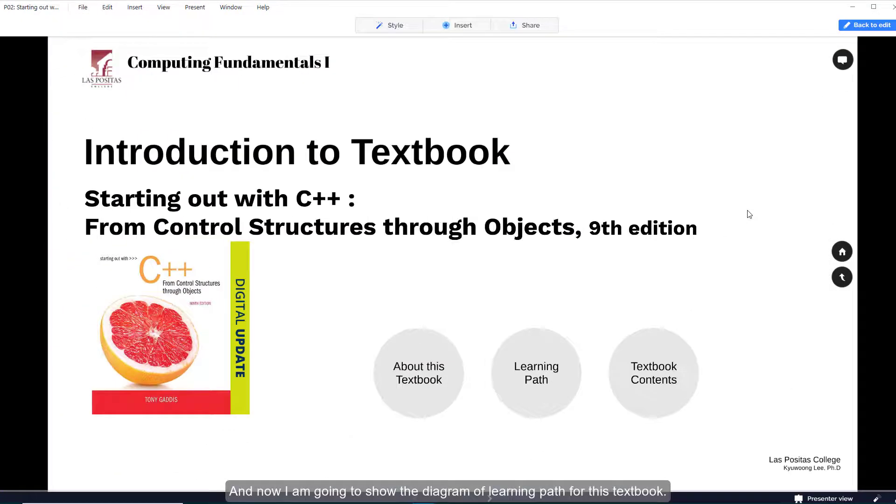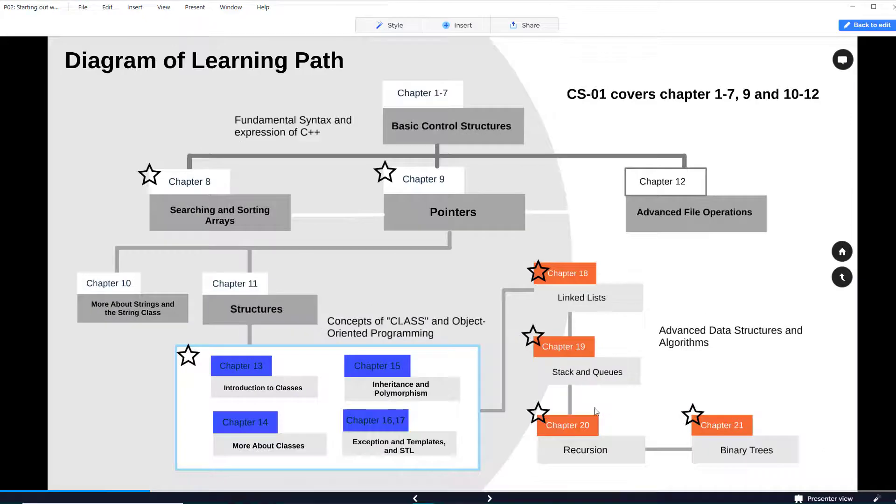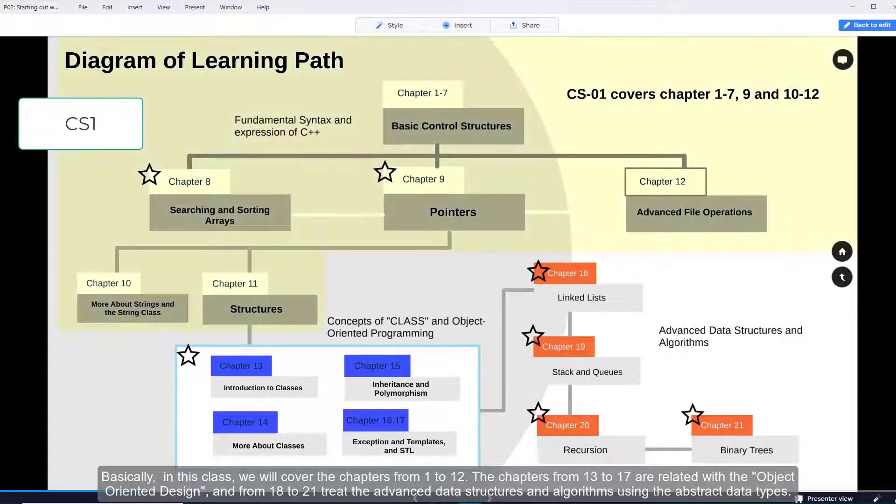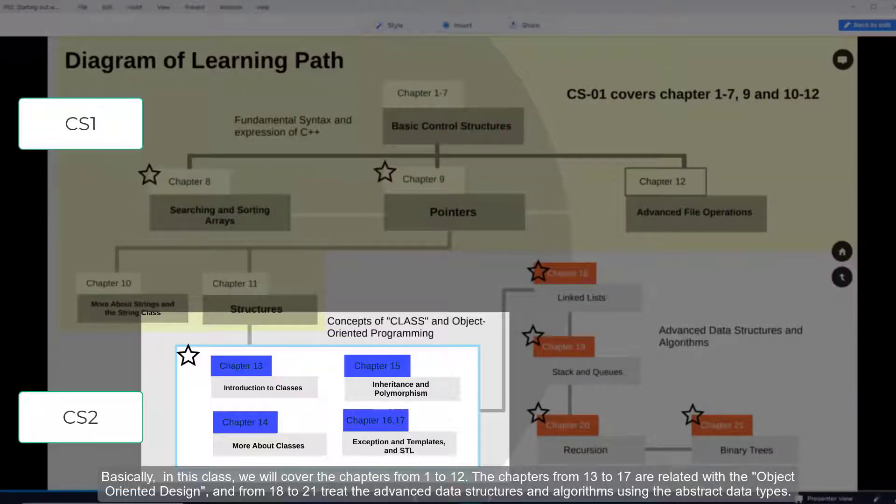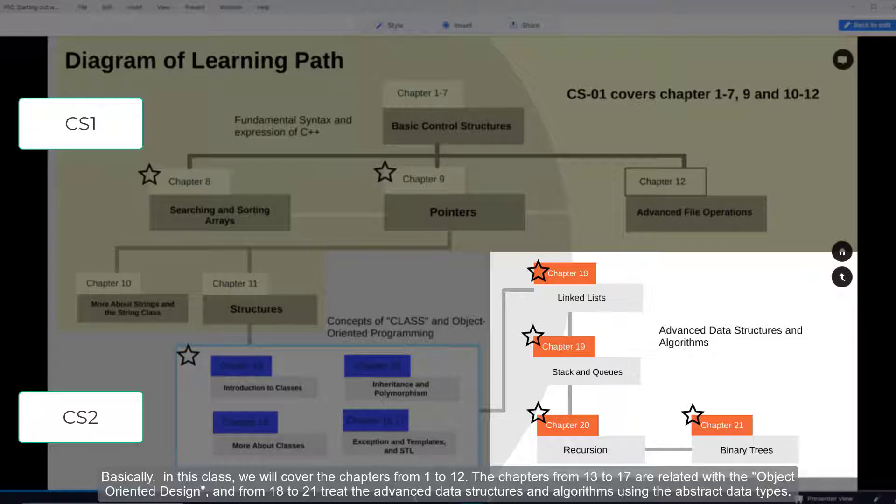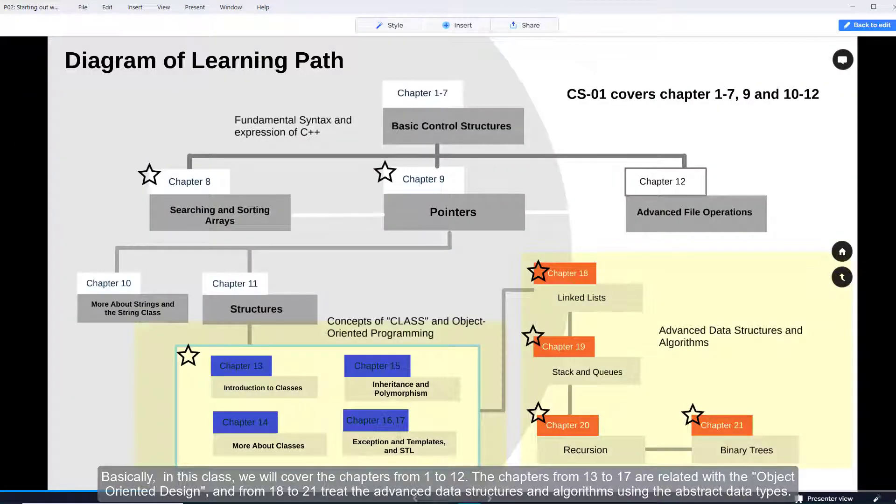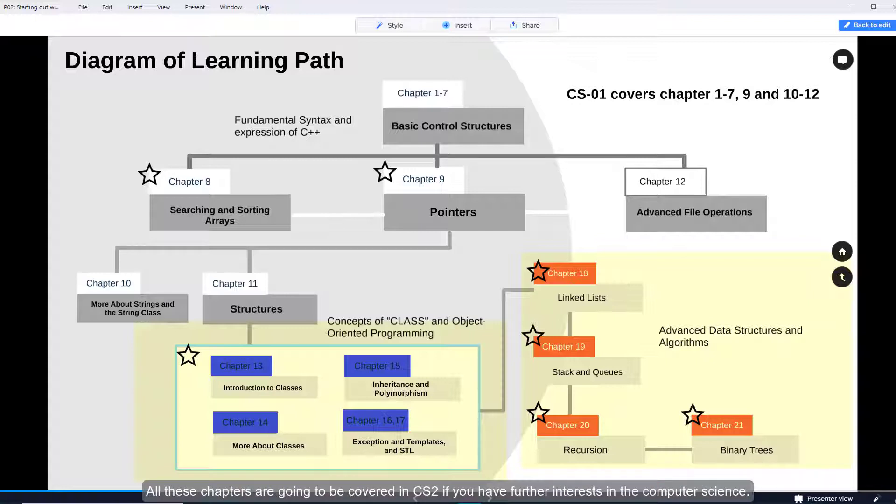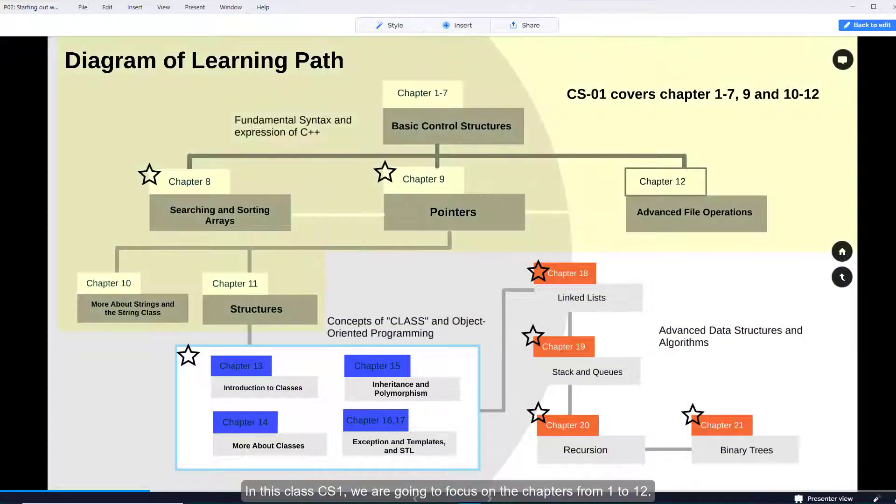Now I'm going to show the diagram of a learning path for this textbook. Basically in this class we will cover chapters from 1 to 12. The chapters from 13 to 17 are related with object-oriented design, and from 18 to 21 treat the advanced data structures and algorithms using abstract data types. All these chapters are going to be covered in CS2 if you have further interests in computer science. In this class we are going to focus on chapters from 1 to 12.